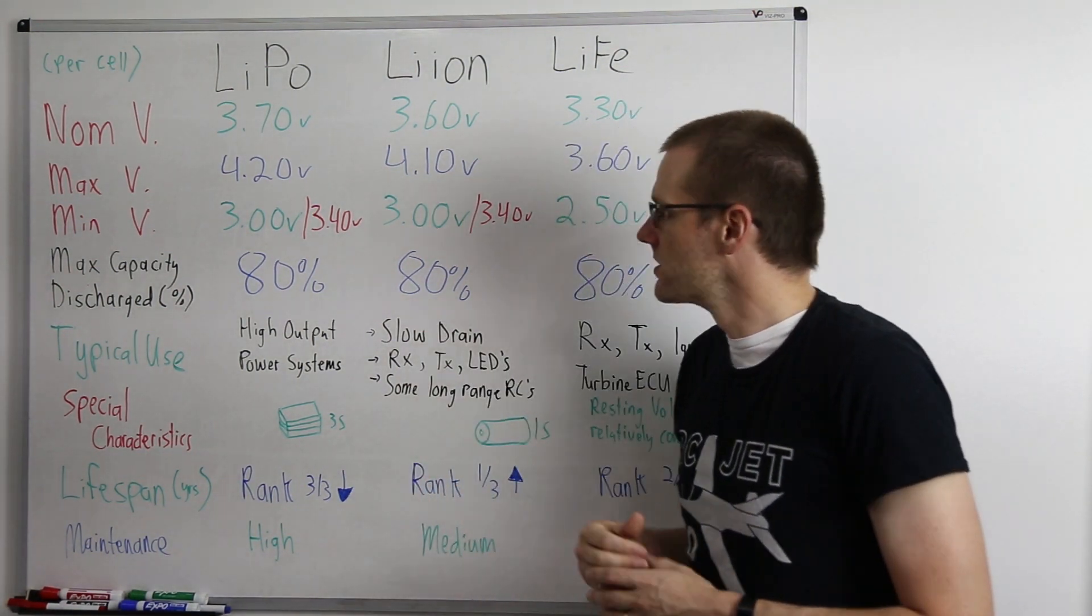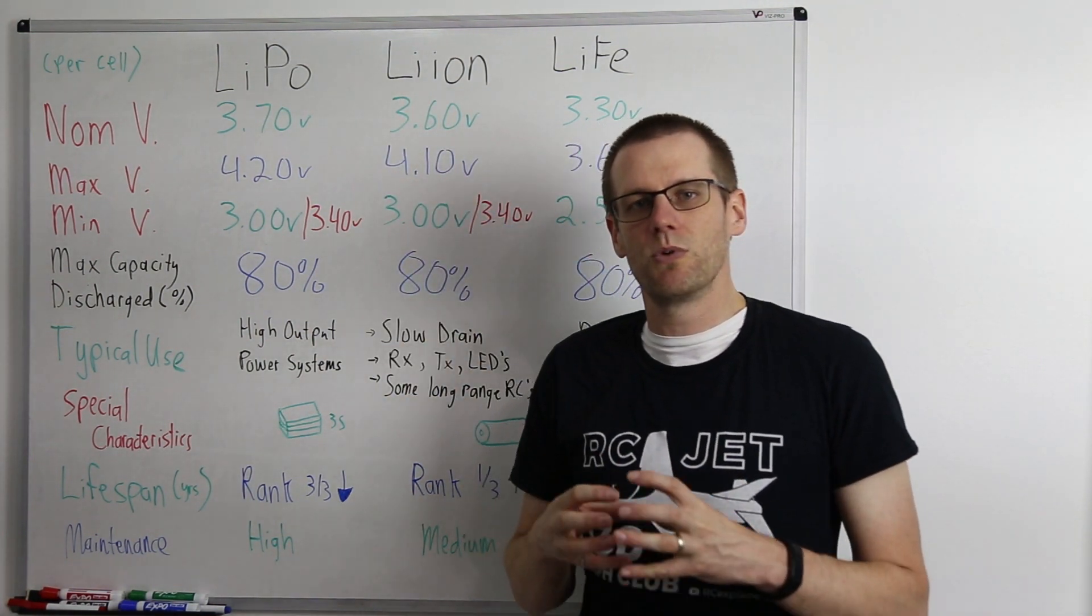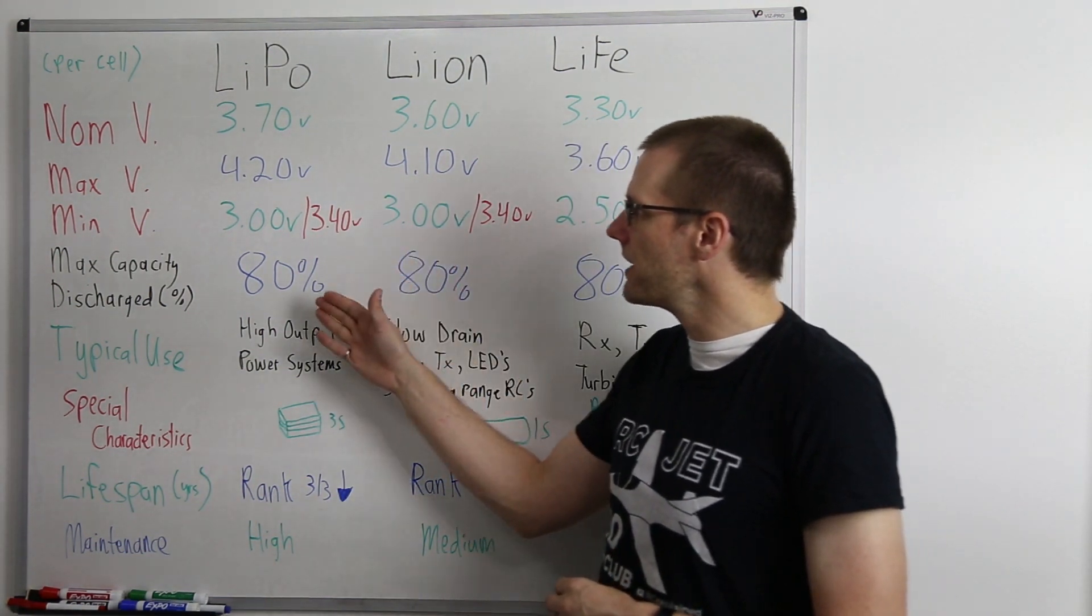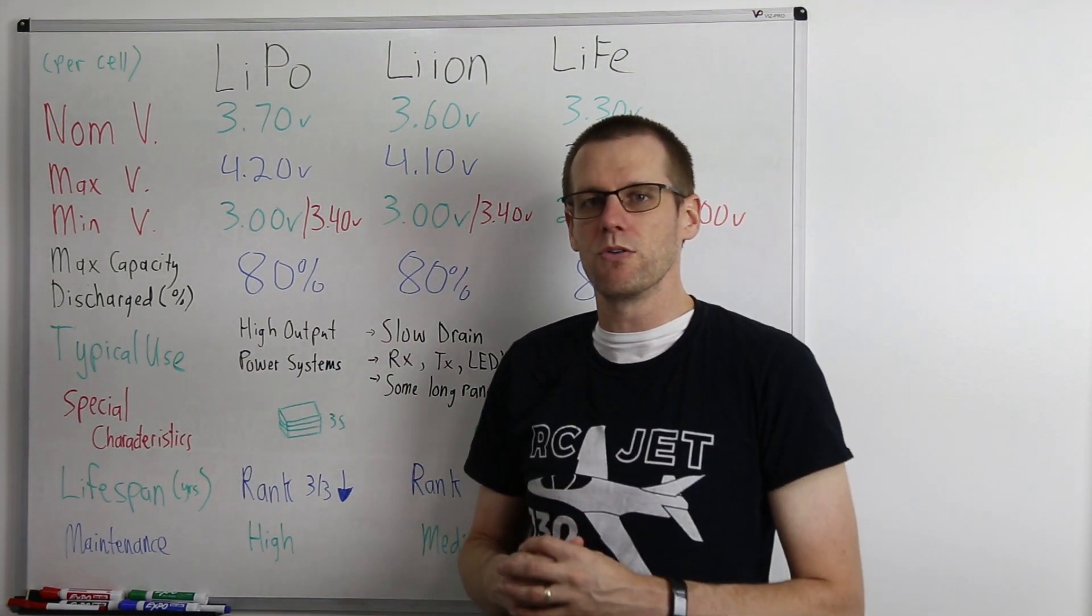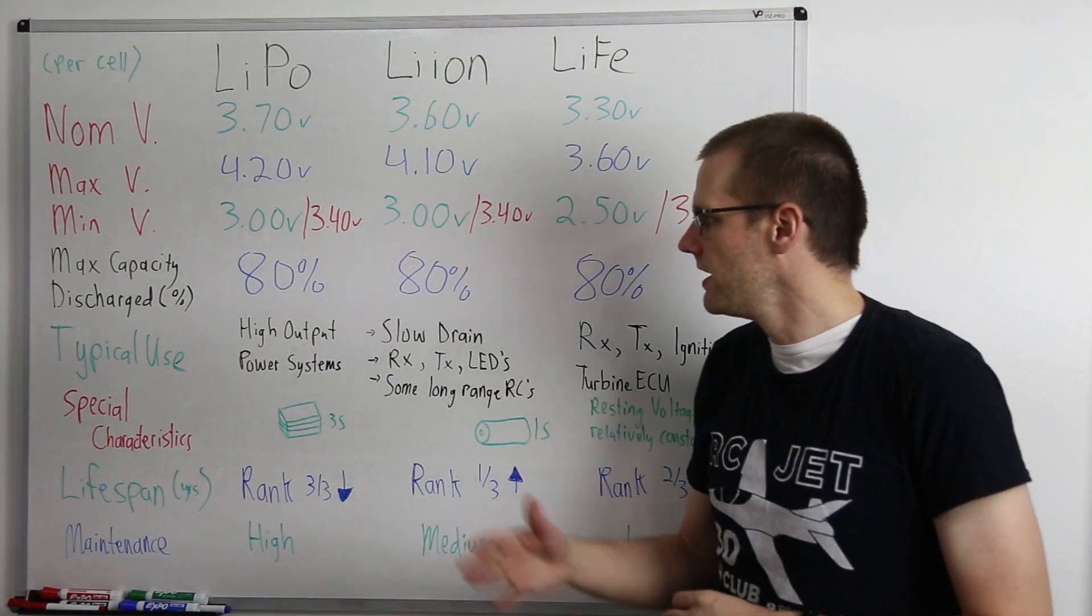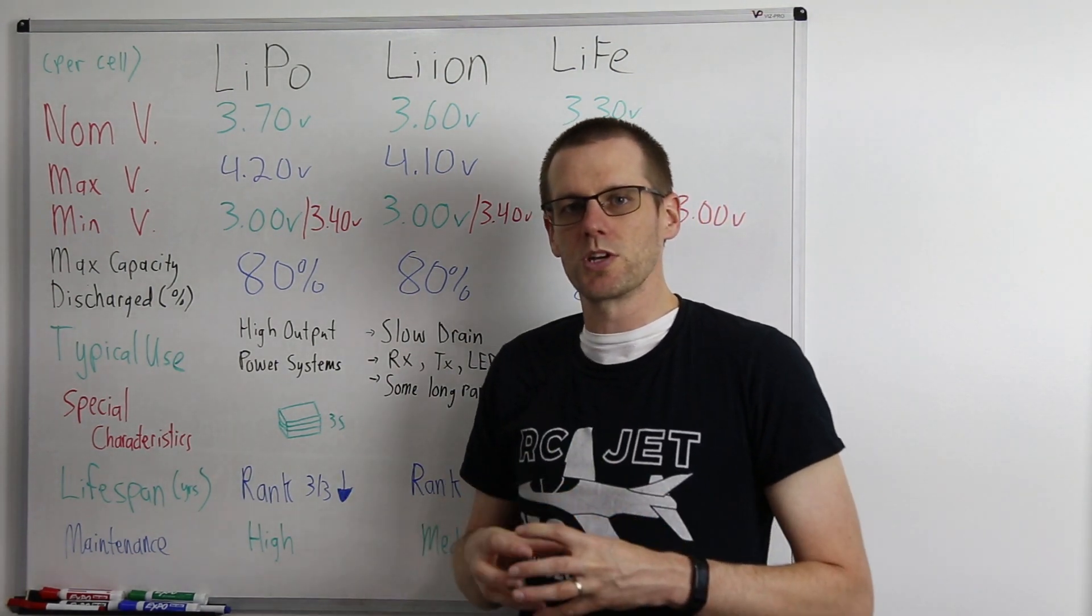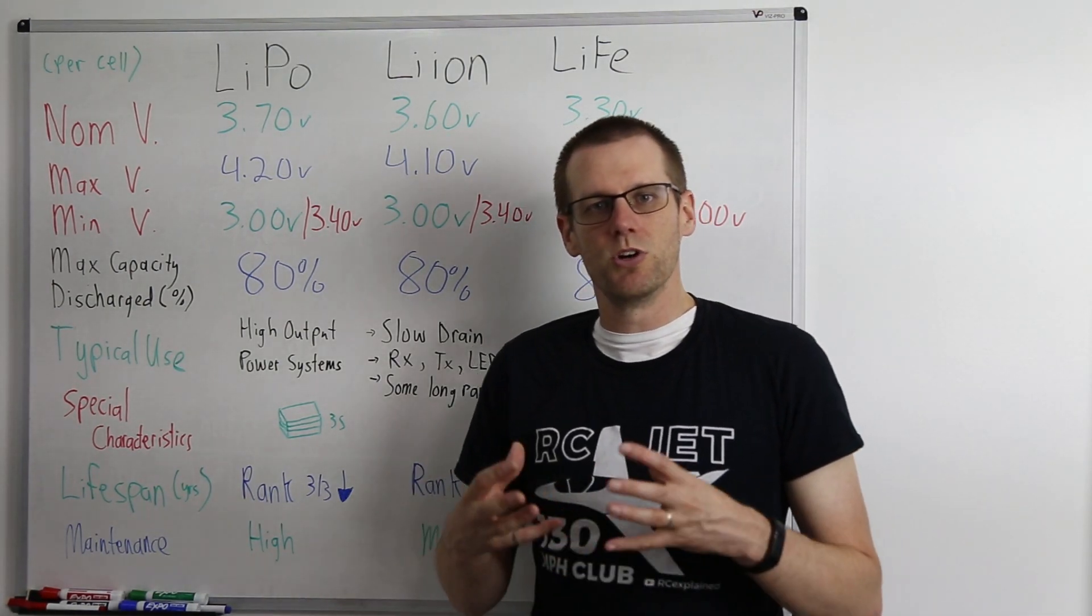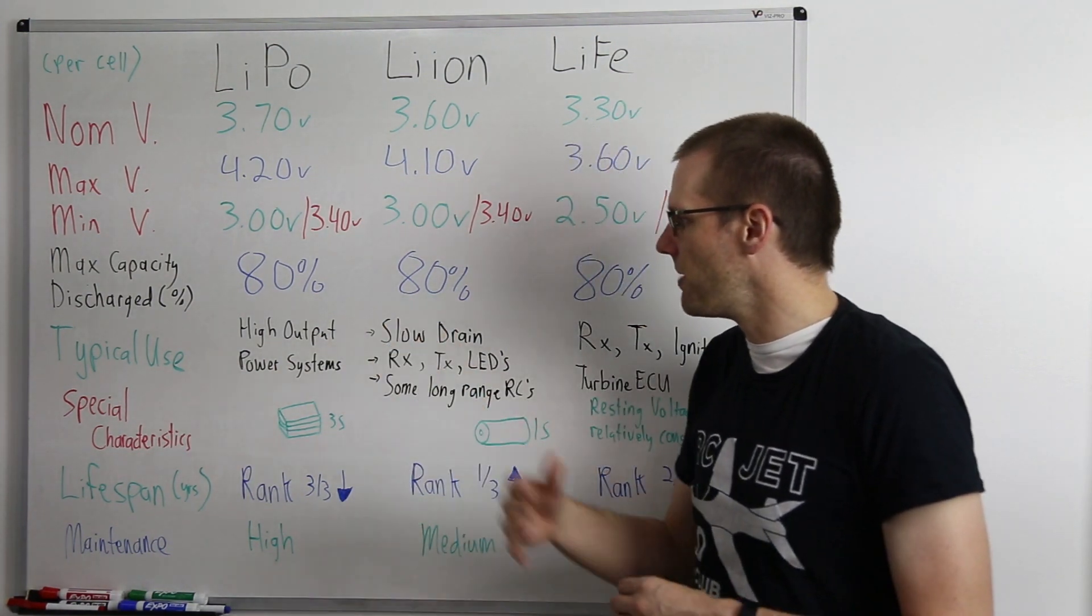Now let's talk about the typical use for each one of these battery chemistries as it would apply in our RC world. So when we first start out by talking about our LiPo battery pack, you would typically see one of these battery packs used in high output power systems. The big advantage of a LiPo battery pack is that it can dump a ton of power out, especially for its size and its weight. This makes it perfect for those high output scenarios where we need to deliver lots of current. Specifically, what we're talking about here is the rate at which we're able to discharge that battery pack, which is going to be equal to the amount of current that we can actually get out of a LiPo battery pack.